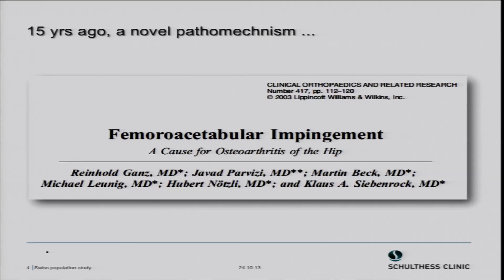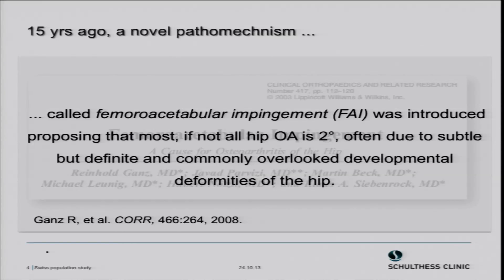In that paper, a novel pathomechanism called FAI was introduced, proposing that most, if not all, osteoarthritis of the hip is secondary — meaning it has an underlying structural disease, which is often due to very subtle changes of the joint that we have frequently overlooked when looking at X-rays.